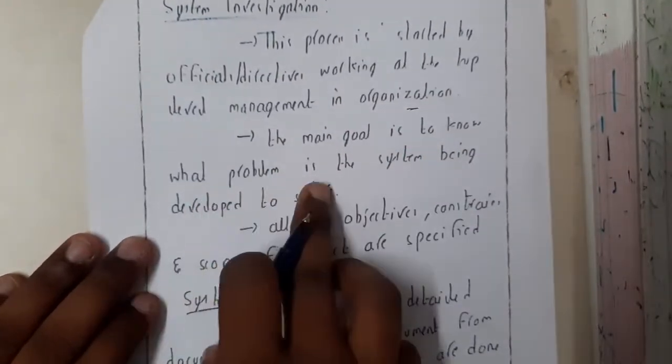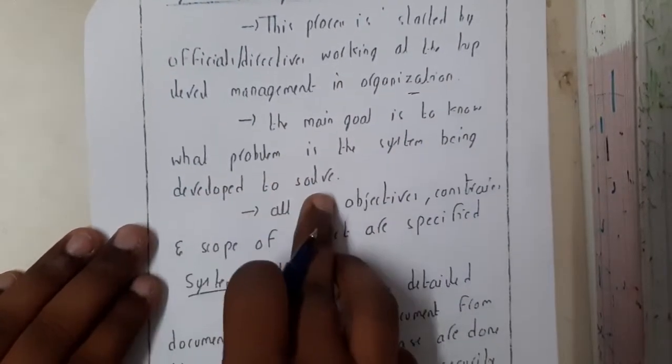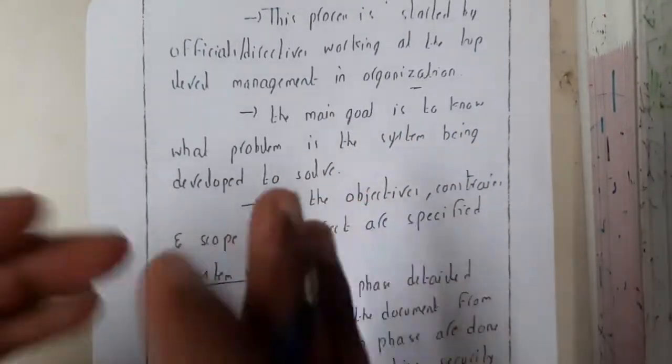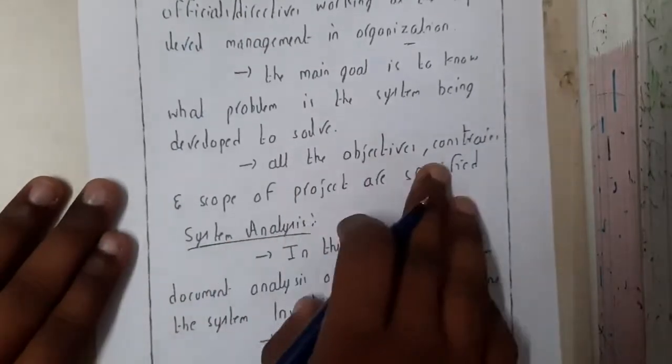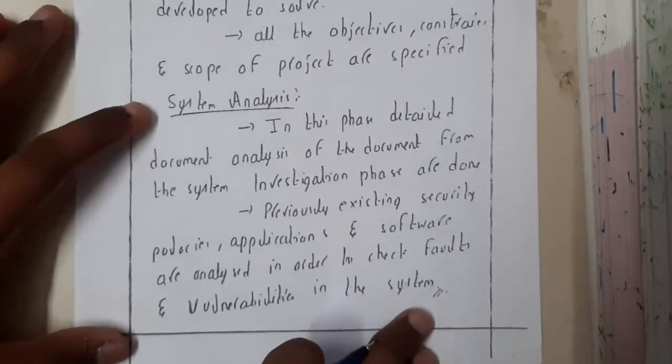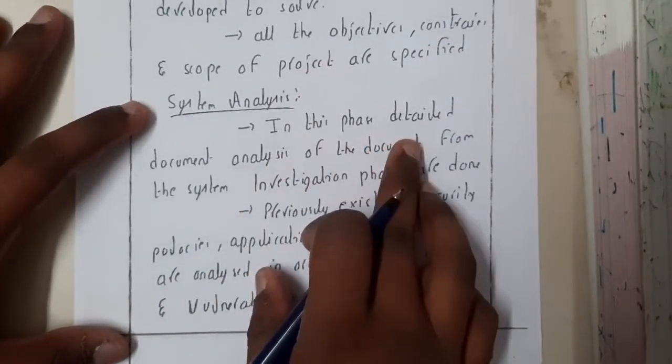Then moving on to system analysis. That is nothing but in this phase, detailed document analysis of documents from the system investigation phase are done. So previously existing security policies and everything will be compared because here we are doing analysis, right? So how much will they affect, what are the vulnerabilities and all those things we'll be checking here.